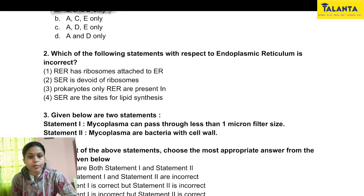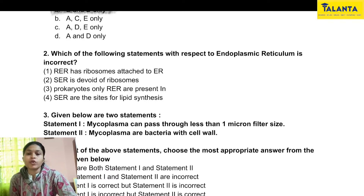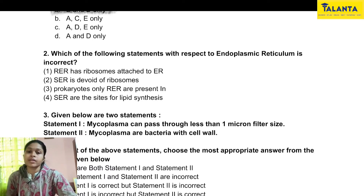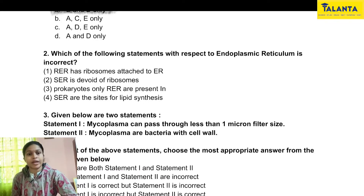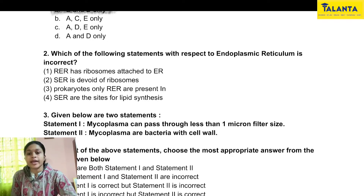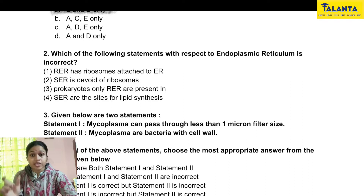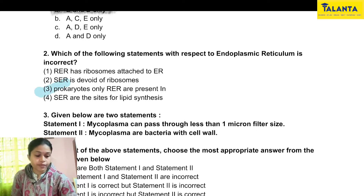Option 3 states that in prokaryotes, only rough endoplasmic reticulum is present. This is wrong, because we know that prokaryotes do not have double-membrane organelles. Endoplasmic reticulum is a double-membrane organelle. Prokaryotes do not have double-membrane organelles. So option 3 is incorrect — and this is our answer.